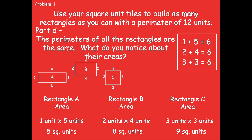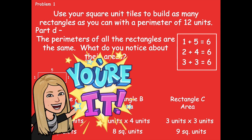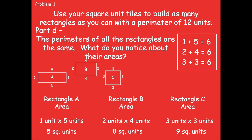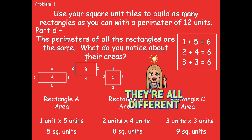Part D says: the perimeters of all the rectangles are the same — what do you notice about their areas? They're all different! They all have a perimeter of 12 units, but rectangle A's area is 5 square units, B is 8 square units, and C is 9 square units. So in this lesson we can see that rectangles can have the same perimeter but they don't always have to have the same area.